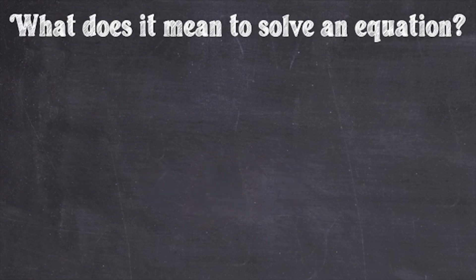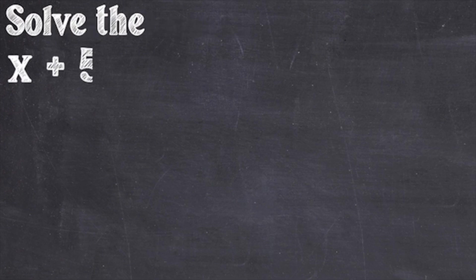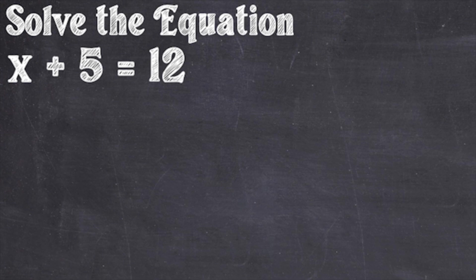Now that we have an idea of what it means for an equation to be true, we can now start solving equations. Look at this problem here: solve the equation x plus 5 equals 12. What does this problem mean when it says solve? When we solve, we are trying to find a number that we can replace x with so that the equation is true. When we find this number, we will call it a solution to the equation. So how do we find this solution? Let's first try out a few options.